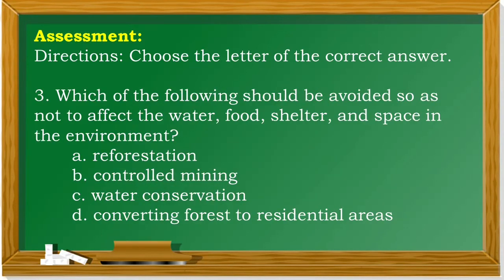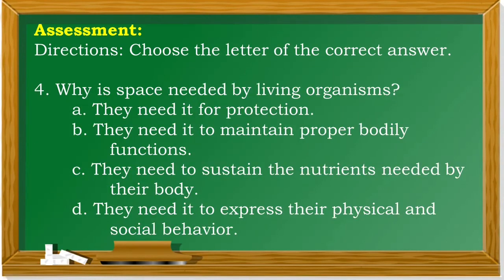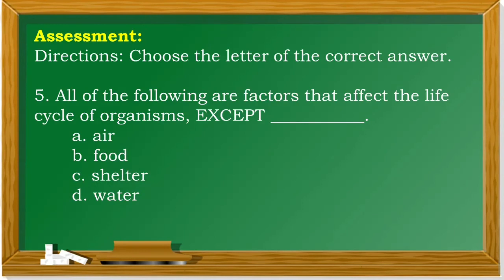Number 3: Which of the following should be avoided so as not to affect the water, food, shelter, and space in the environment? A. Reforestation. B. Controlled mining. C. Water conservation. D. Converting forests to residential areas. The correct answer is letter D. Number 4: Why is space needed by living organisms? A. They need it for protection. B. They need it to maintain proper bodily functions. C. They need it to sustain the nutrients needed by their body. D. They need it to express their physical and social behavior. The correct answer is letter D. Number 5: All of the following are factors that affect the life cycle of organisms except: A. Air. B. Food. C. Shelter. D. Water. The correct answer is letter A.